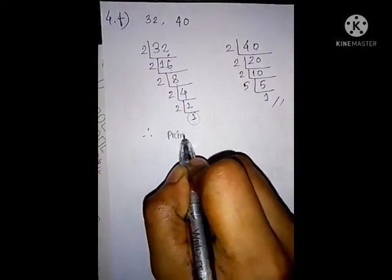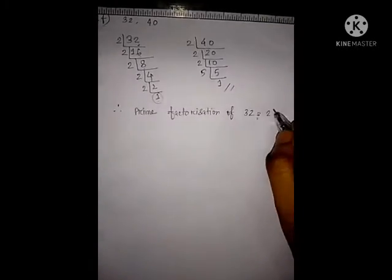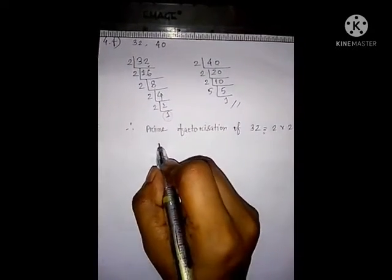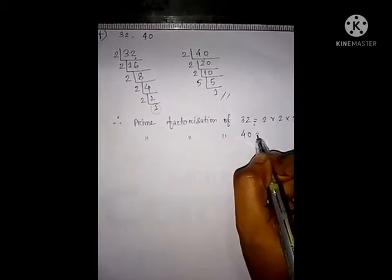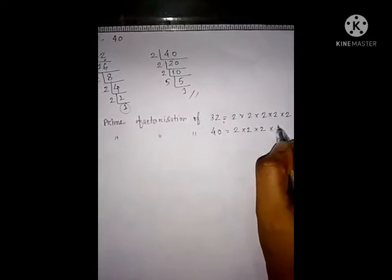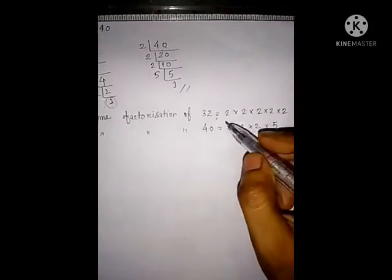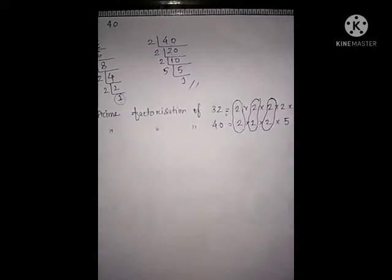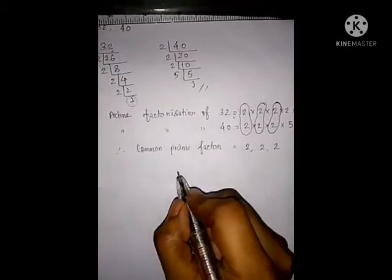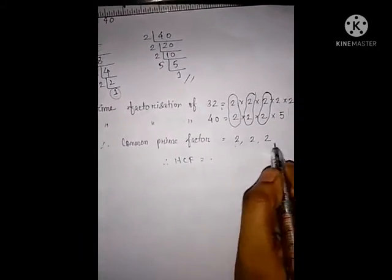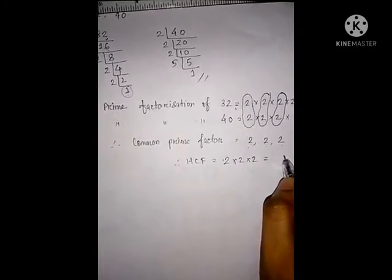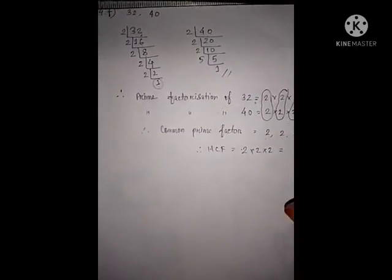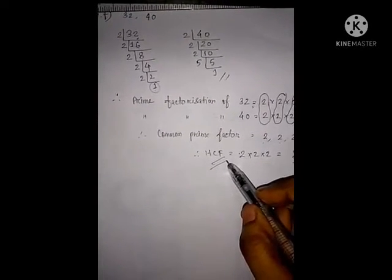Prime factorization of 32 is 2 × 2 × 2 × 2 × 2. Prime factorization of 40 is 2 × 2 × 2 × 5. The common prime factors are 2, 2 and 2. Therefore, HCF is equal to 2 × 2 × 2 = 8. So 8 is the HCF of 32 and 40. That is how we use prime factorization to find the HCF of any numbers.